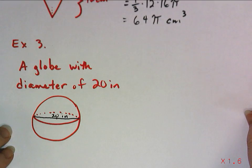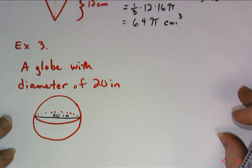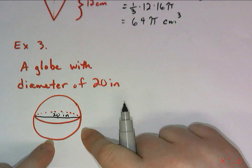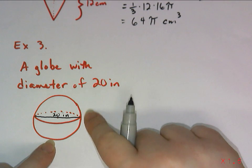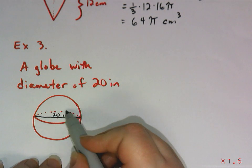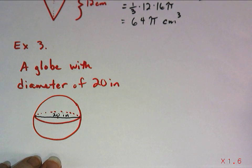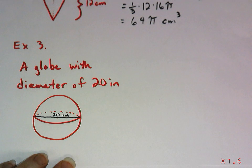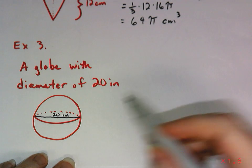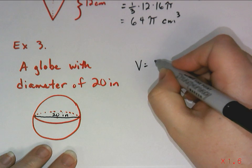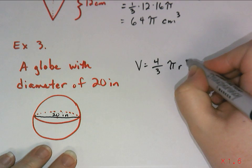All right, how about we do example three now? A globe with a diameter of 20 inches. So when you're drawing a three-dimensional object like a sphere, it can be kind of hard, because otherwise it might just look like a circle unless I do something. So what they do is they put this part in. It's called the great circle. It's like if I cut my sphere in half, what I would be looking at to kind of indicate and help give this some three-dimensional look in the drawing. And the diameter is 20 inches.